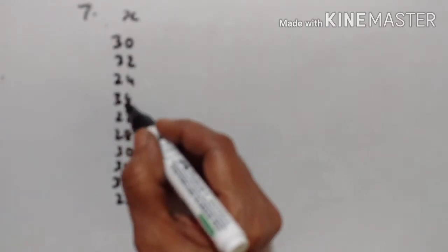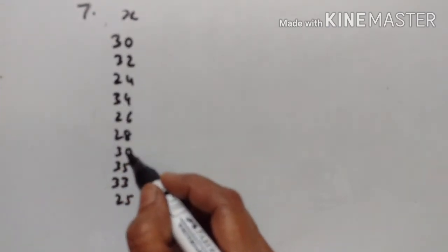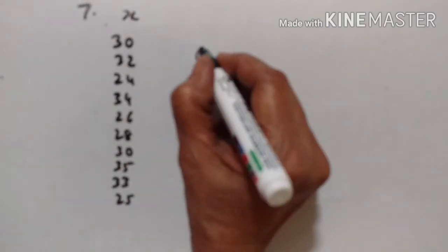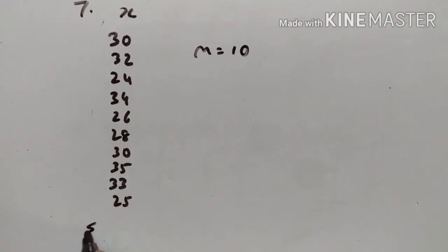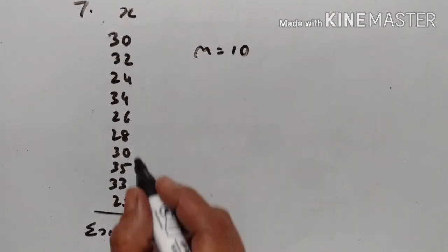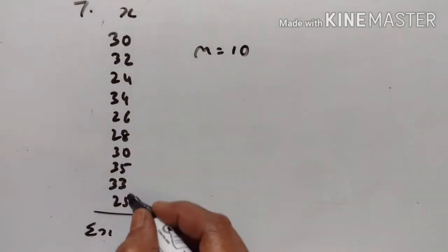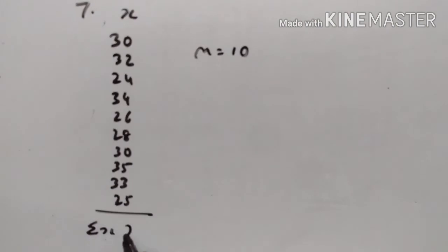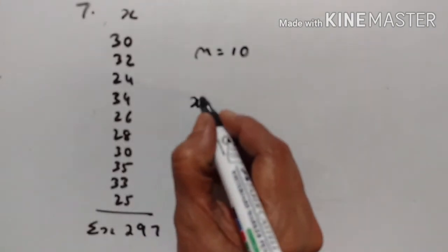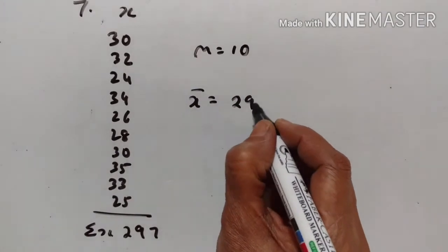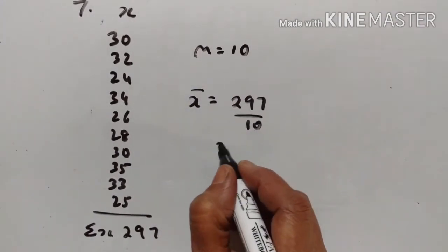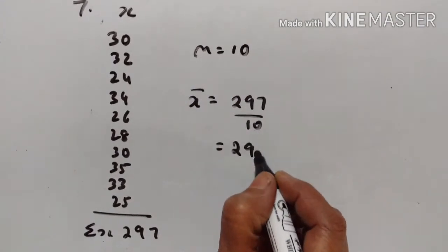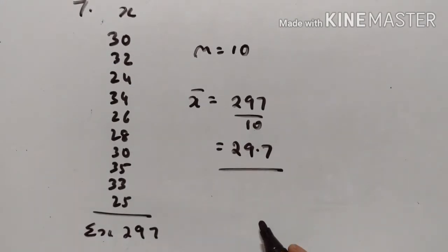n is equal to 1, 2, 3, 4, 5, 6, 7, 8, 9, 10. So n is equal to 10. And sigma x — when we add this, we get 297. So mean is equal to 297 divided by 10, that is 29.7. This is the mean.